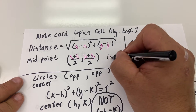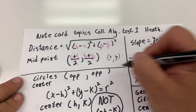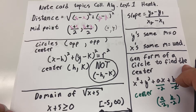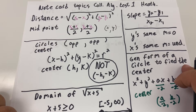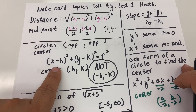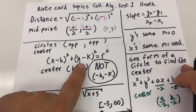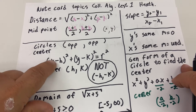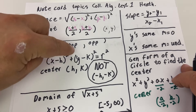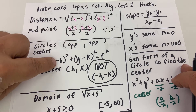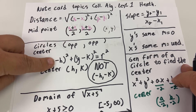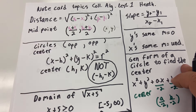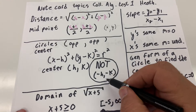Your answer will be a coordinate of an x value and a y value. For circles, it's opposite-opposite to find the center. So if you have x minus h and y minus k, it's going to be the opposite of negative h, which is positive h, and opposite of negative k, which is positive k. It's not the same.